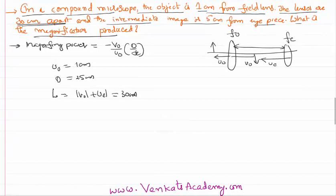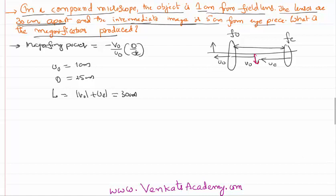It is further given that the intermediate image is 5 centimeters from the eyepiece, so this ue value is given as 5 centimeters. vo value magnitude I don't know, but ue is given as 5, totally 30, that implies the value of vo is 25 centimeters.